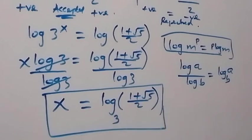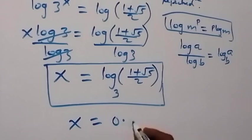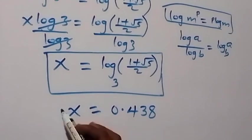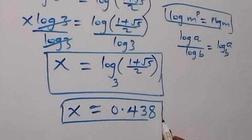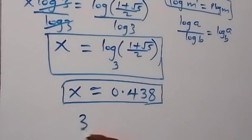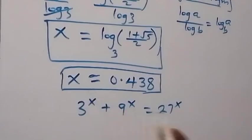This is the exact value of x for the given problem. We can also check this using a calculator to get the decimal approximation: x is approximately equal to 0.48. Substituting back into 3 raised to power x plus 9 raised to power x equals 27 raised to power x confirms the left-hand side approximately equals the right-hand side.